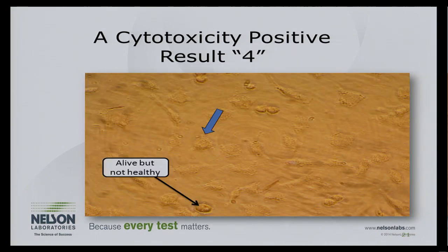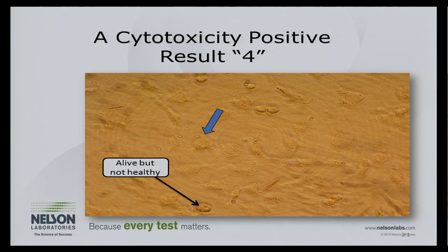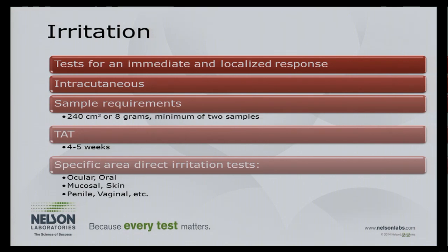A score of zero looks like healthy cells in a mosaic pattern, stretching out and making connections. We stain with neutral red, a viability stain — healthy cells bring it into their lysosomes and stain red. A score of four looks like latex damage: cells fixed or burned to the plate, appearing like skeletons with no uptake of the stain. That's how we score — by examining cell percentage affected under microscopy and assigning a score from 0 to 4.